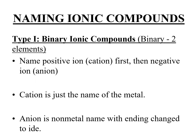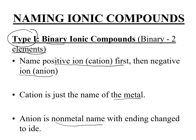For naming ionic compounds, we have two types. Type 1 are binary ionic compounds — binary means two elements. You always name your cation first; cations are the positive ones, then name your anion. The cation is just the element's name or the name of the metal. The anion is the non-metal with the ending changed to 'ide,' just like when we learned to name cations and anions.